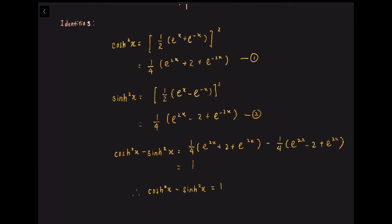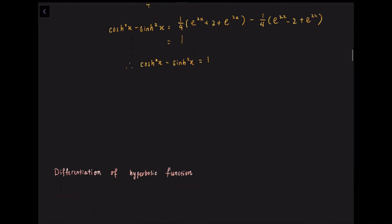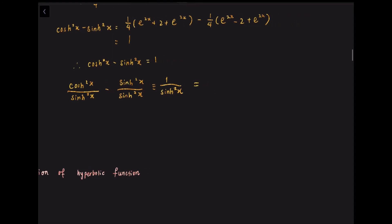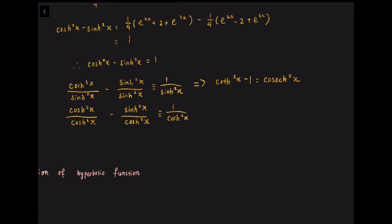Notice the similarity of this hyperbolic identity with the usual trigonometric identity cos²(x) + sin²(x) = 1. Dividing cosh²(x) − sinh²(x) = 1 by sinh²(x) gives coth²(x) − 1 = csch²(x). Dividing by cosh²(x) gives 1 − tanh²(x) = sech²(x).